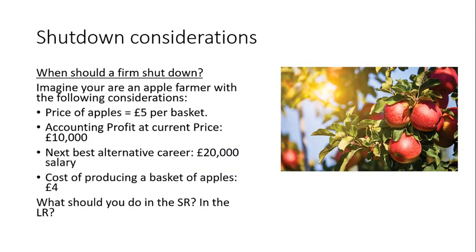Going back to the apple farmer example: they're not making any abnormal profit — in fact, not even normal profit, because they're making 10,000 pounds accounting profit but the opportunity cost is 20,000 pounds. The opportunity cost exceeds their accounting profit, giving negative economic profit — they should be getting out at the next long-run time horizon. But because the cost of producing a basket of apples is four pounds and the price is five pounds, they make a one-pound contribution per basket. So in the short run, keep selling — it doesn't make sense not to earn that pound.